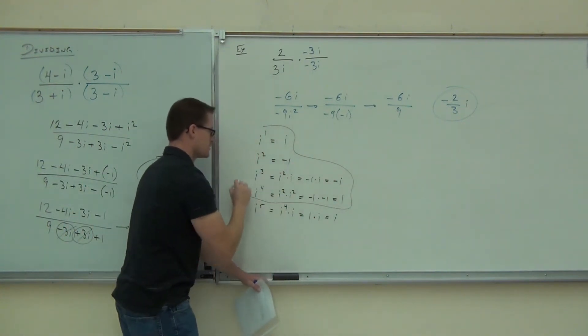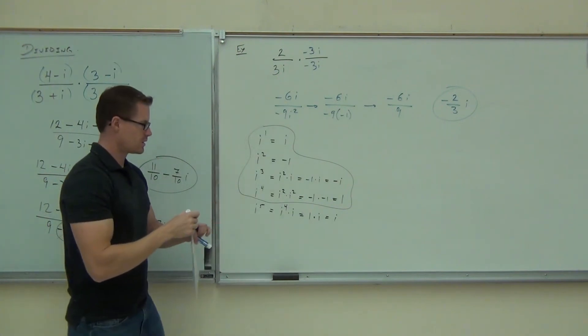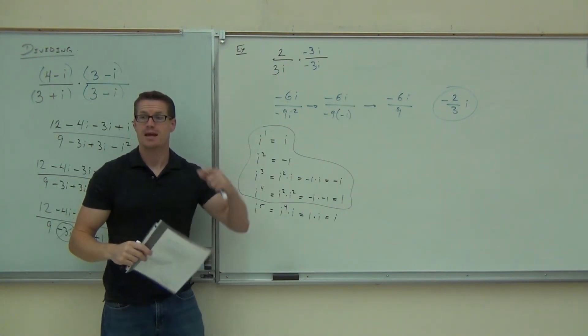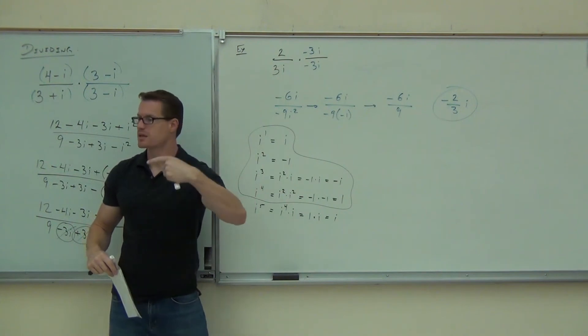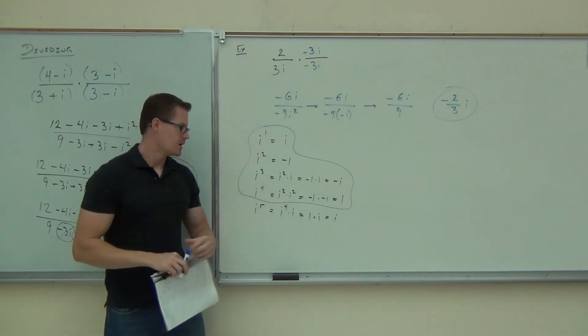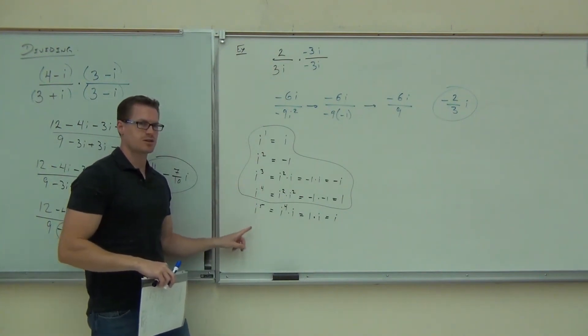What just happened? I have no idea. What just happened? I don't know if it went around in a circle. It's cyclical. It's going to go back. This is a little bit of number theory I'm teaching right here. Guess how much i to the sixth is going to be?